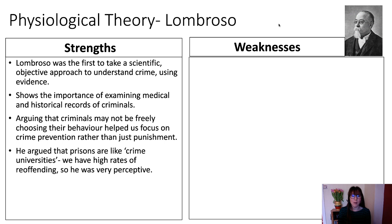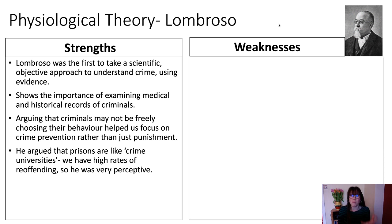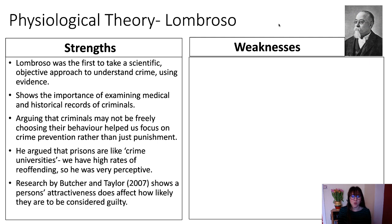Lombroso argued that prisons are like 'crime universities' — he was very perceptive about high re-offending rates. Research by Butcher and Teller (2007) shows a person's attractiveness affects how likely they are to be considered guilty — which may explain why someone like Ted Bundy, being charismatic and attractive, got away with crimes for so long.